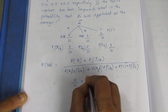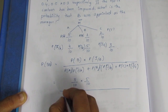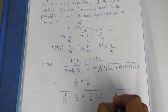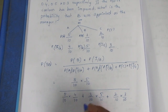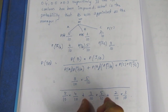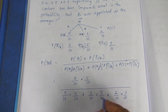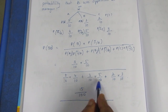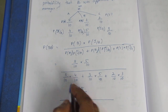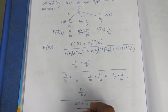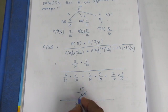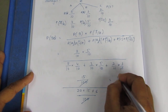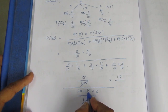So this is 3 by 10 into 5 by 10, divided by 5 by 10 into 4 by 10 plus 3 by 10 into 5 by 10 plus 2 by 10 into 3 by 10. We can cancel the common denominators. The numerator is 15 by 100. Adding the denominator: 20 plus 15 plus 6 equals 41. So the result is 15 by 41.